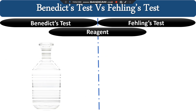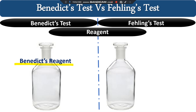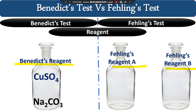The first difference in both tests is about the reagents. In the Benedict test we use a reagent called Benedict's reagent, whereas in the Fehling test we use two different reagents called Fehling's reagent A and Fehling's reagent B. The composition of Benedict's reagent includes sodium carbonate, which provides the alkaline environment; copper sulphate, which provides the Cu²⁺ ion for the reaction; and sodium citrate, which keeps the copper²⁺ ion in the +2 state.